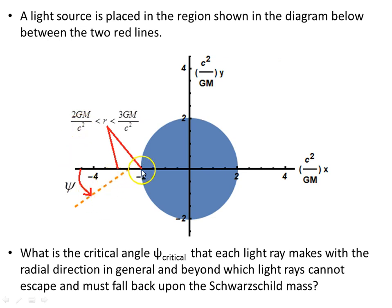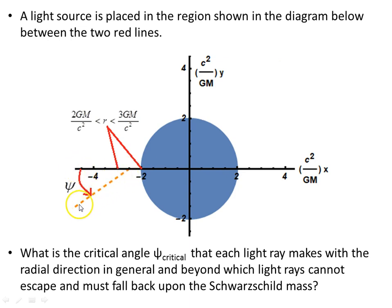We want to know the angle between the radial direction (the horizontal axis) and the light ray. A source emitting light in all directions — what part will escape? What is this opening angle, which extends symmetrically on both sides by symmetry? How will that angle change as we go from 3GM/c² (one and a half times the Schwarzschild radius) right down to the Schwarzschild radius itself?